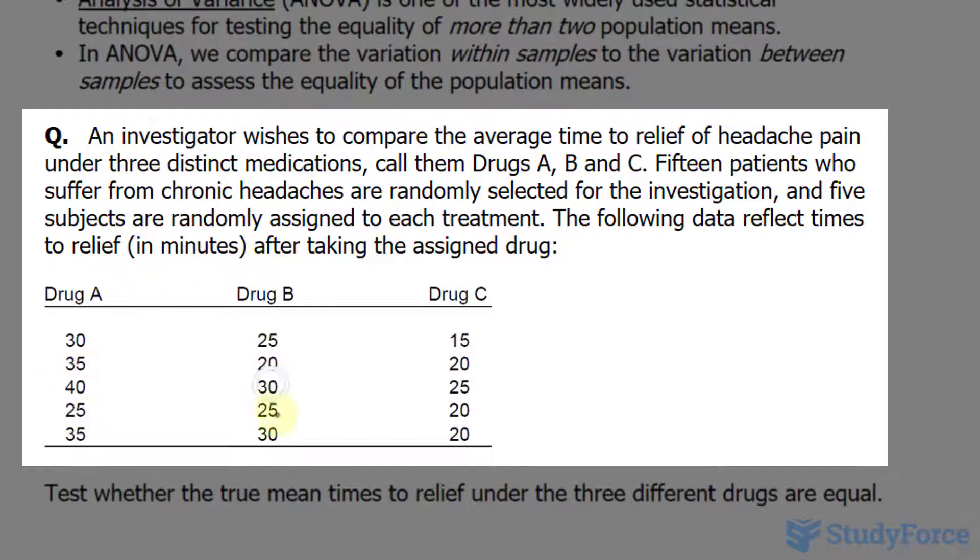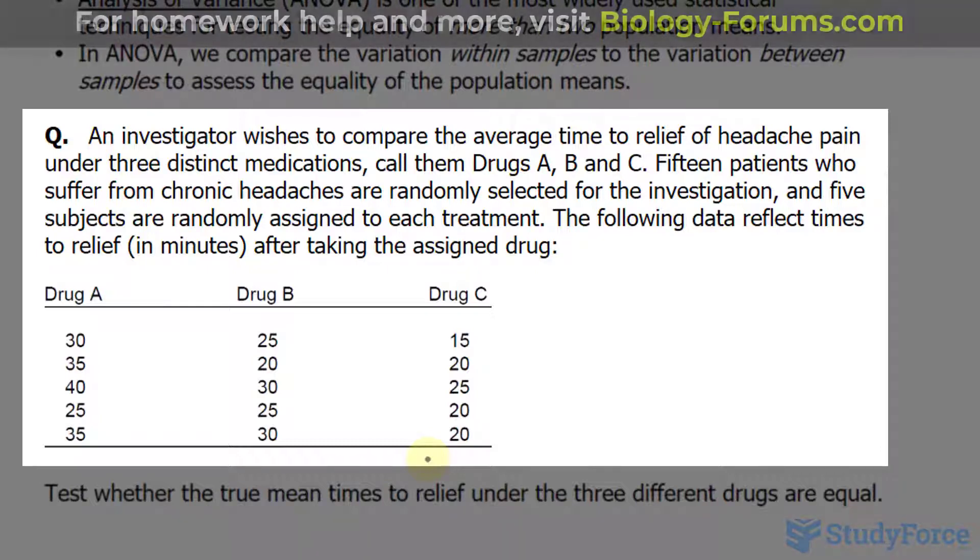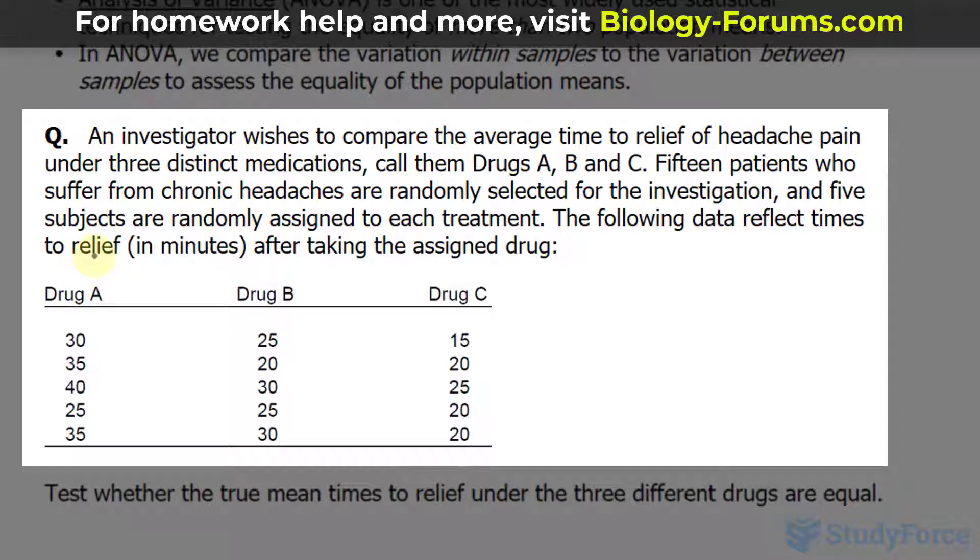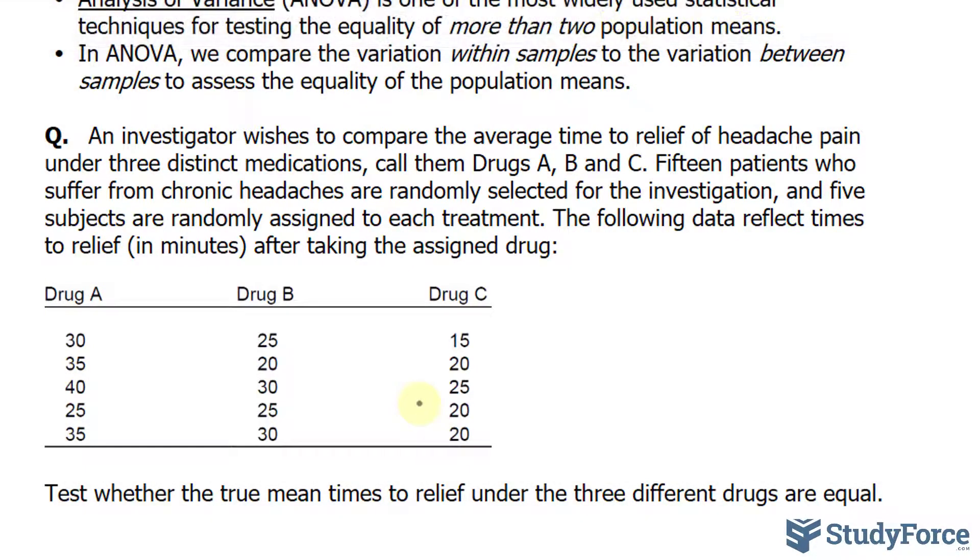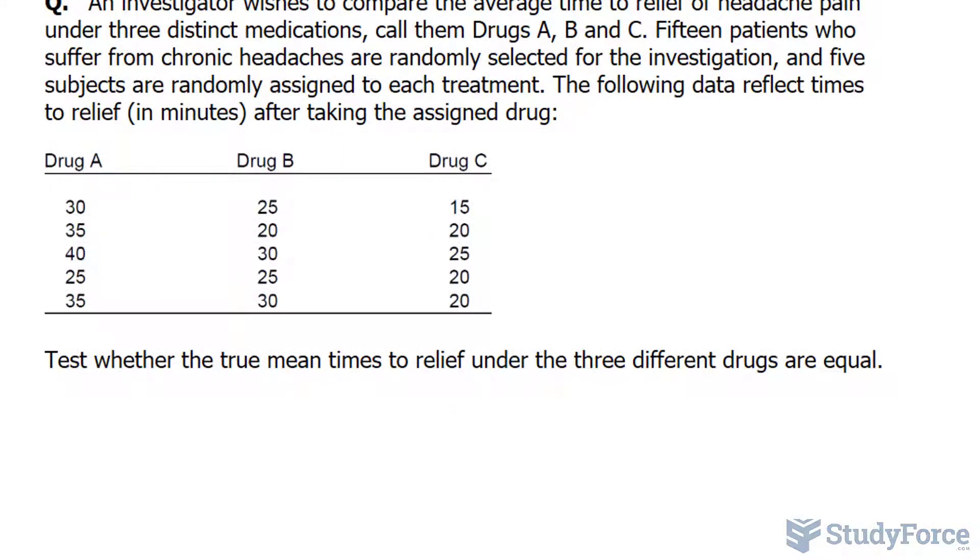Notice that we have an equal amount of subjects in each treatment. When you don't have that, where there is a discrepancy between one group and the other, we use a slightly different approach. The following data reflects time to relief in minutes after taking the assigned drug. Our task is to test whether the true mean times to relief under the three different drugs are equal.